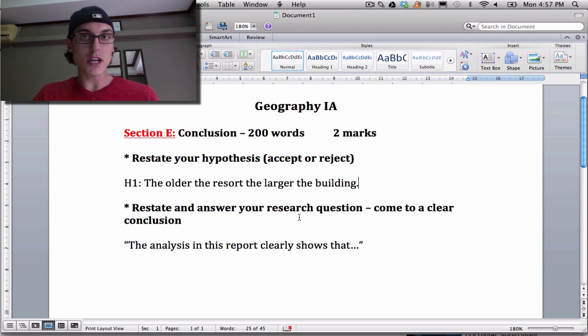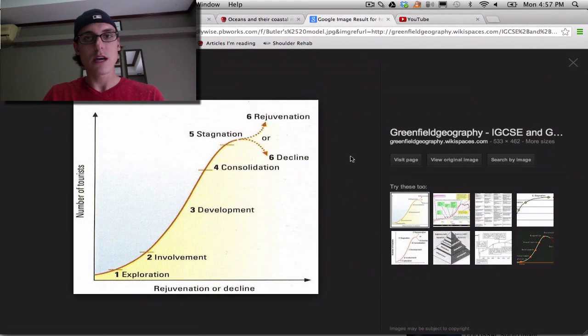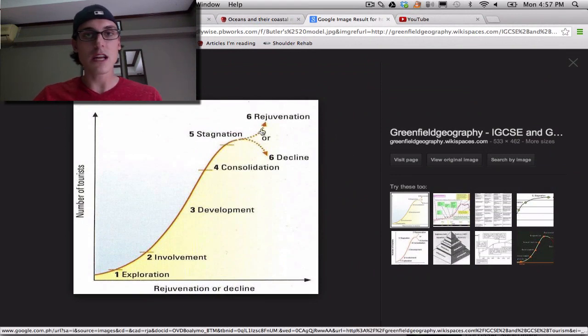I looked at Butler's model and how the resorts in Mabini match up with Butler's model. If you remember, the stages that every tourist resort goes through start with exploration up to stagnation and then either a rejuvenation or decline. We went over this in class.